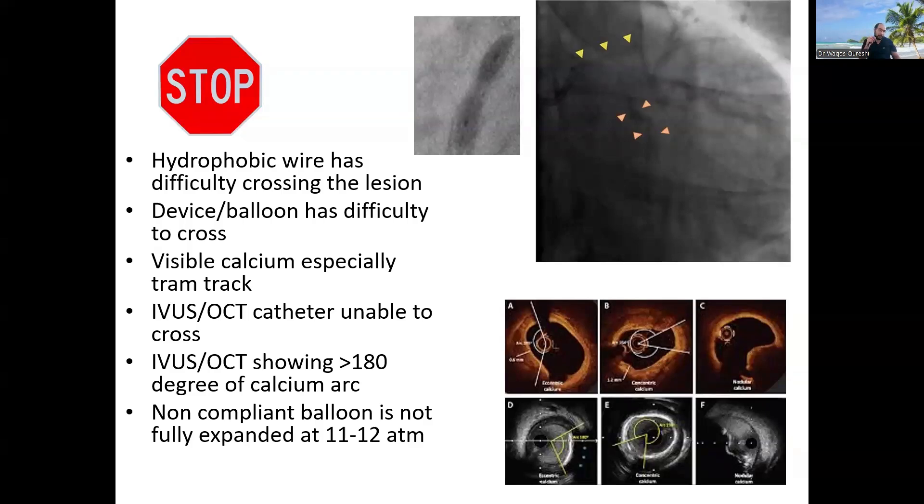I, when I'm putting the wire through, and if I'm using a workhorse wire like Run Through, Sion Blue or Pro Water, and I'm having some resistance, that should trigger me to start thinking about that this vessel may need some atherectomy. After that, I try to put a balloon. If the balloon has difficulty to cross, this two out of these six points, I'm going to think about atherectomy quite like 90% chances that I'm going to do the atherectomy.